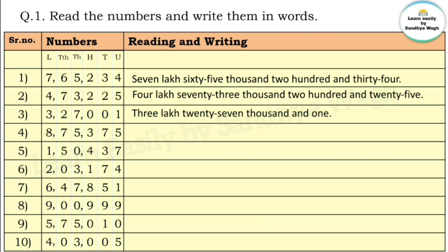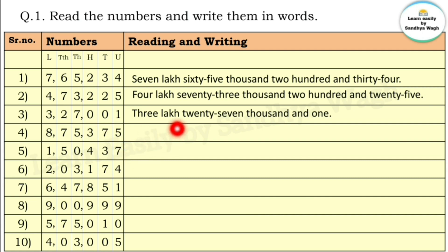For the number 3,27,001: the hundreds place and tens place have zeros, so those places are zero. The number is three lakh twenty seven thousand and one. Next number.